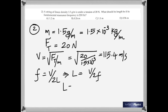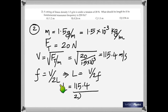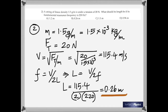You know why that is: the string vibrates in one segment and the whole length of the string is half a wavelength. Therefore, wavelength is 2 times the length — that's why you have 2 times the length in place of wavelength.